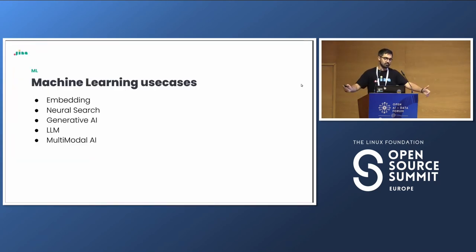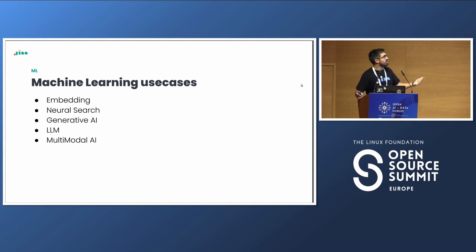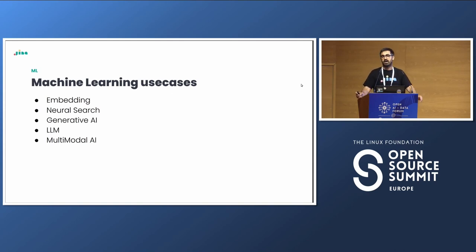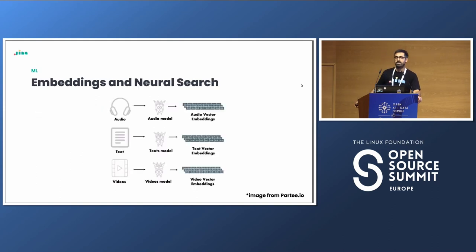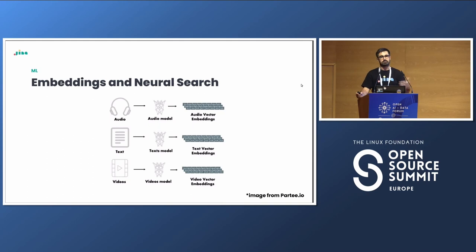Let's see what are the typical use cases that right now, with deep learning models, we can see. We can have generating embeddings, neural search, all the generative AI, LLMs that are a sub-part of generative AI, and the umbrella term of multimodal AI that has appeared now. Embeddings are the main source of force for many downstream tasks in AI. An embedding is a vector representation of any object - it can be text, images, audio, whatever.